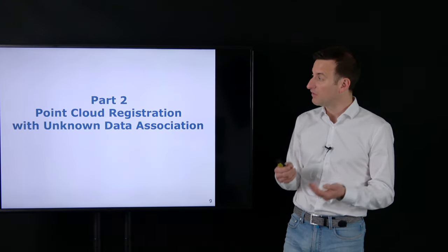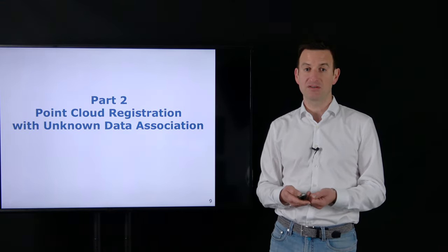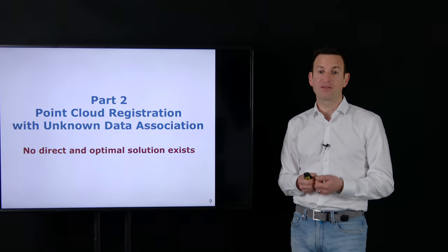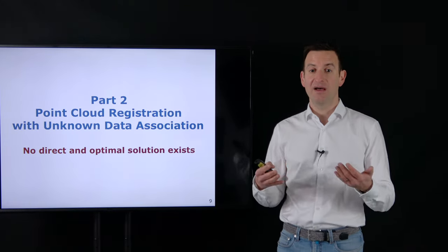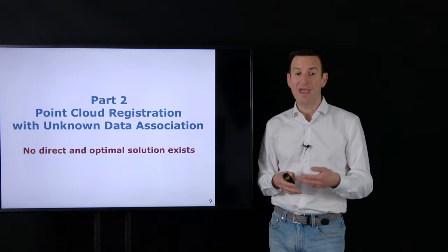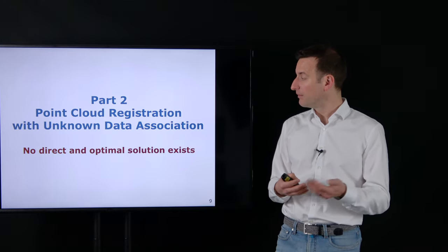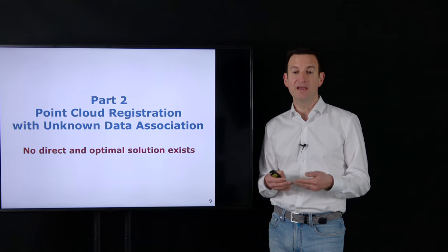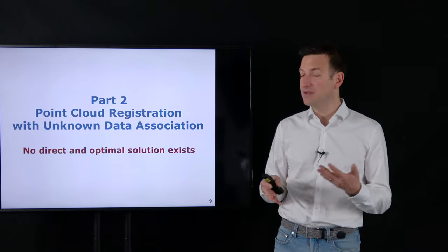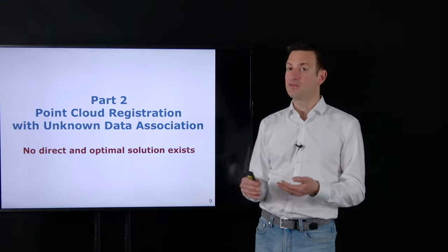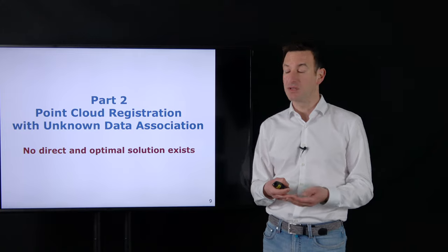Today we dive into the case where we don't know our data associations. Unfortunately, there is no direct or optimal solution to this type of problem. We still need to find a practical solution because point cloud registration is important in practice. This typically leads to an iterative solution requiring an initial guess, and optimality is debatable since we don't know the data associations — in the general case we cannot find an optimal solution.